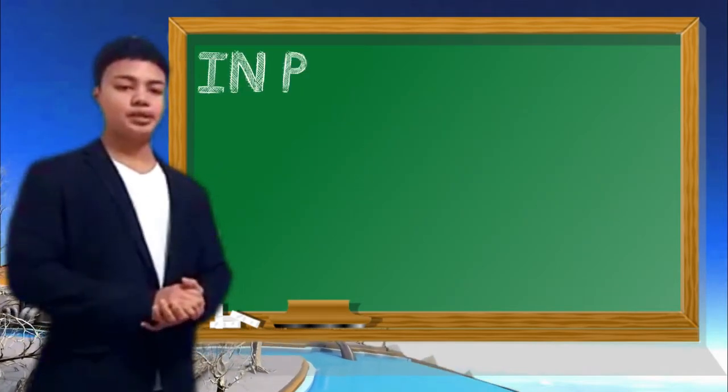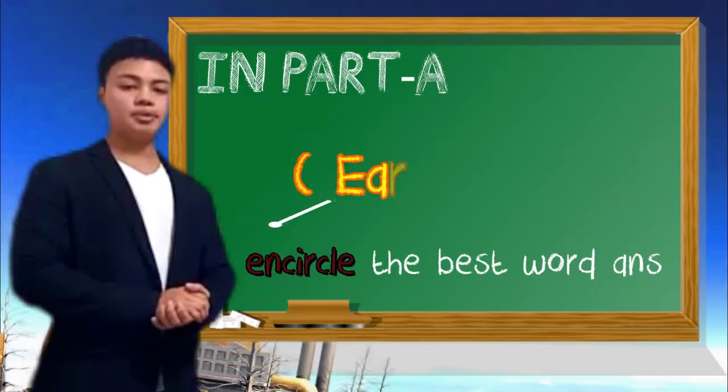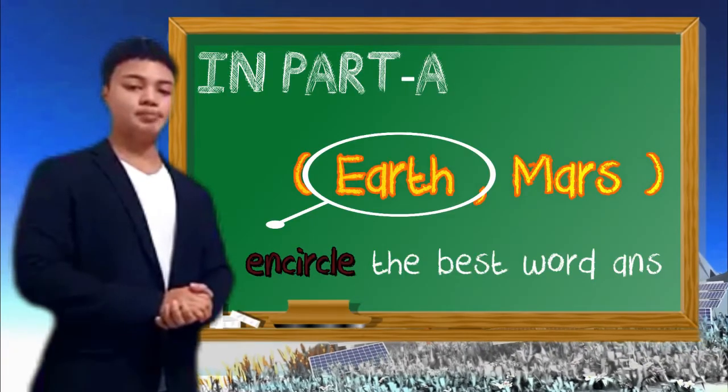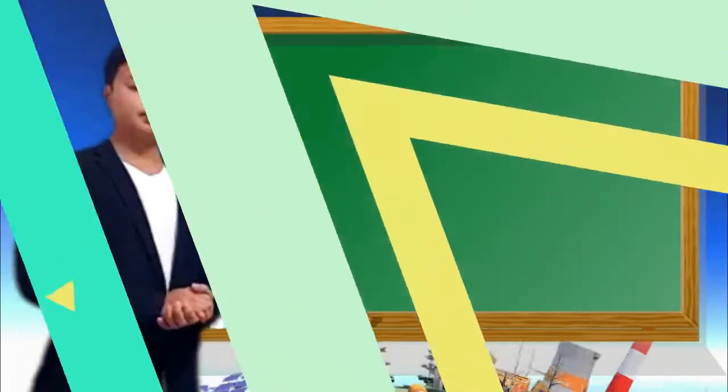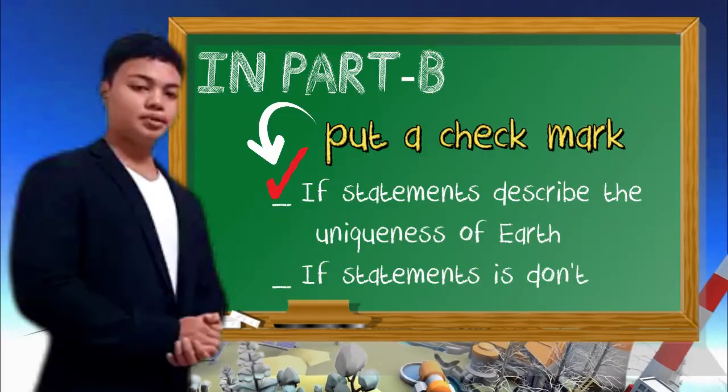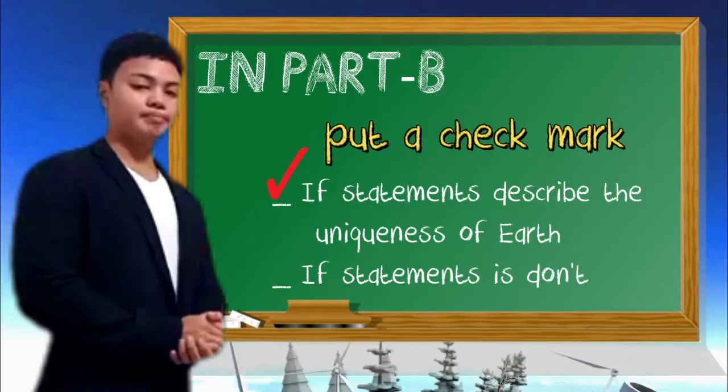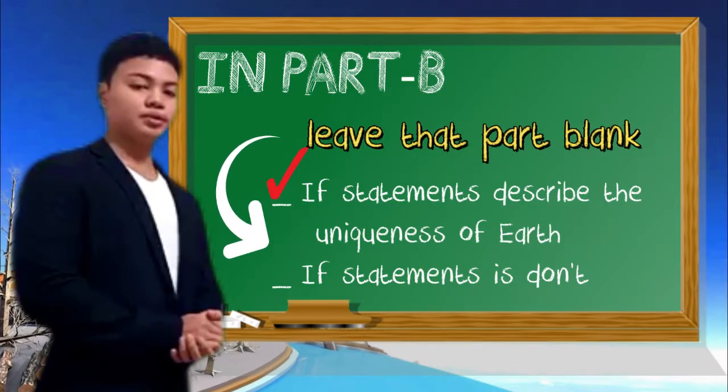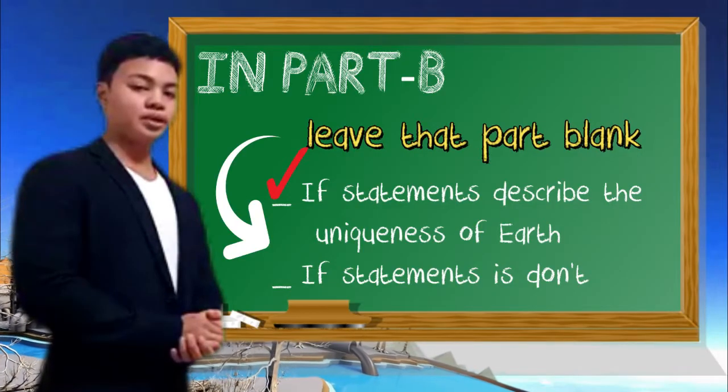For the first part, all you have to do is encircle the word within the parenthesis that best completes each statement. There are two choices inside the parenthesis. Just choose what you think best describes the statement. For the second part, just put a checkmark for the statements that describe the uniqueness of Earth based on what we have discussed earlier. If you think there are statements that don't describe the uniqueness of Earth, just leave the part blank.